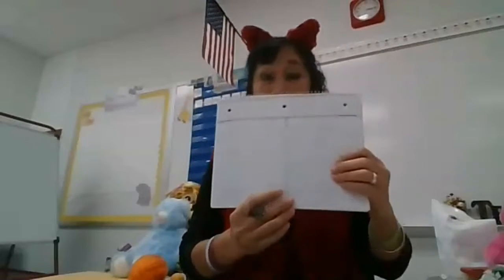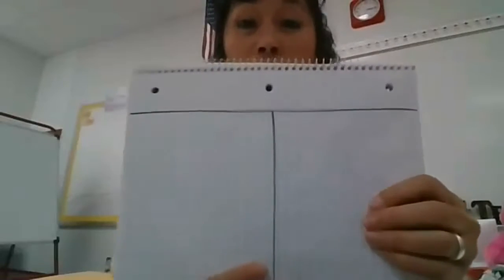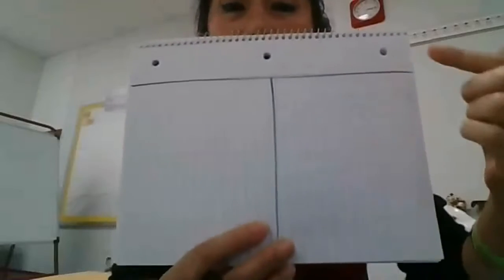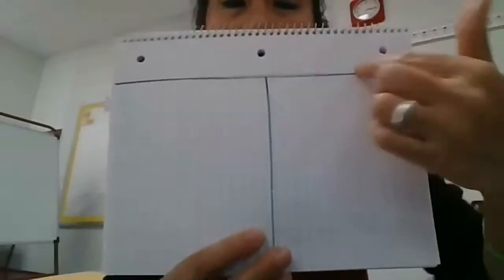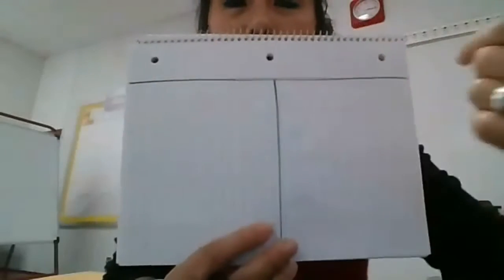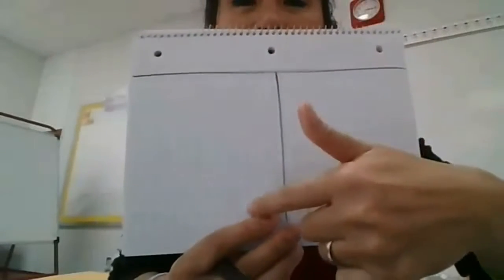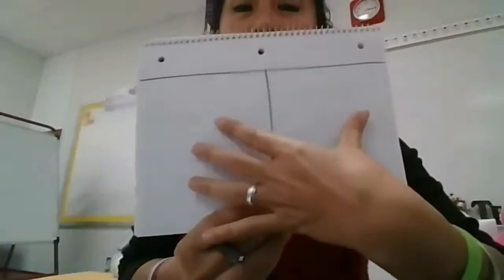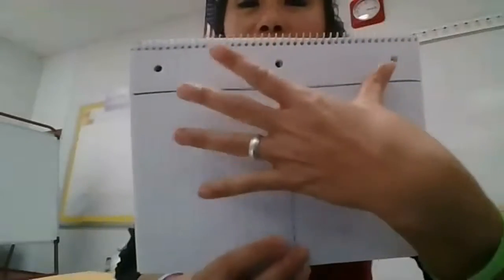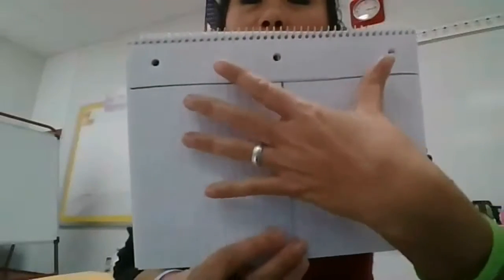Hi guys, this is Ms. Lobach again. Today I'm going to teach you how to create a t-chart. It looks like this — just draw a line across where it's red and draw it straight down. It's called a t-chart because it looks like a capital T, and then you can collect data on this.